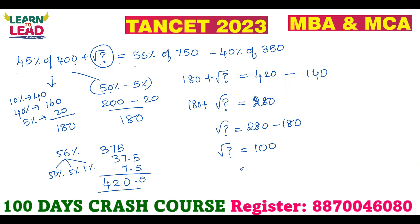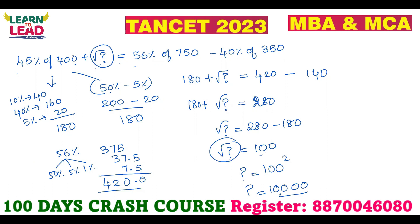Square root of question mark is equal to 100. Question mark is not 100 — question mark is 100 squared, which is 10,000. So 10,000 is your answer, not 10. If the square root equals 100, then the question mark is 10,000. Do you understand?